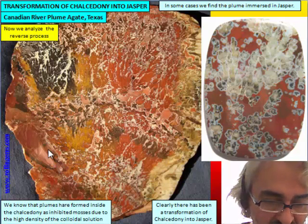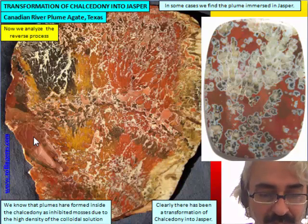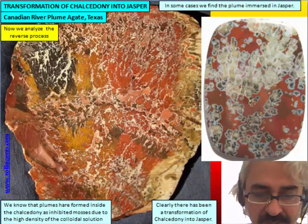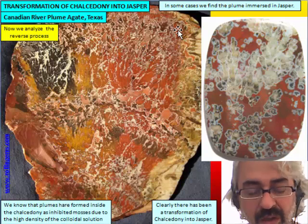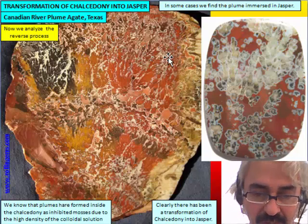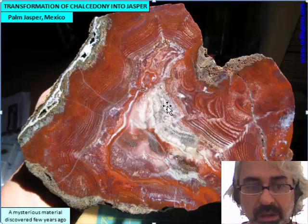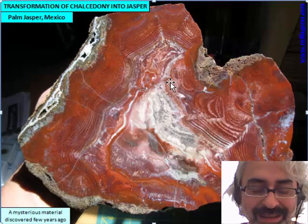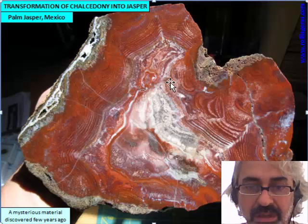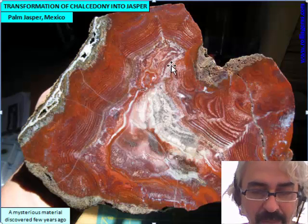When the jasper is formed there is enough time to reiterate all the process responsible for the formation of orbs. So this is the inverse process with respect to the transformation of jasper into chalcedony. This is another material showing the same transformation, which comes from Mexico and appeared only a few years ago. Nobody knows exactly what kind of material it is — a big chunk of very tough material, very good for lapidary purposes, but difficult to understand.